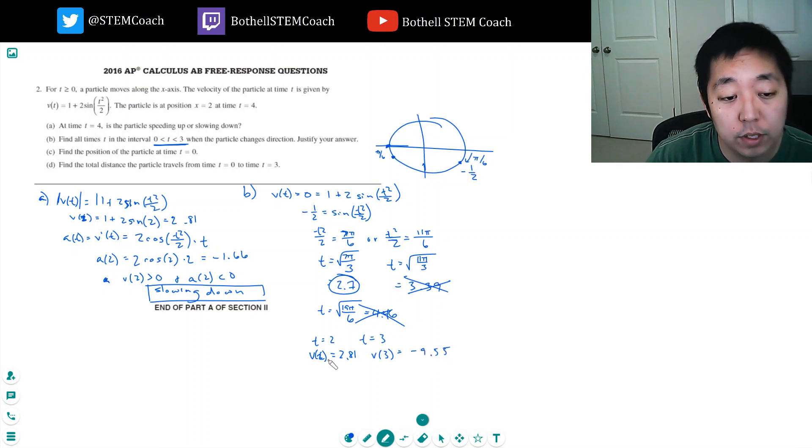So the velocity does go from positive to negative around 2.3. So it changes. So 2.7 is my answer. So that's when it can change direction. It goes from the positive direction to the negative direction.